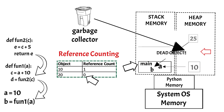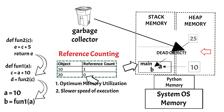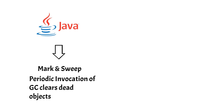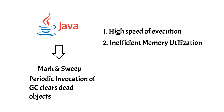This algorithm is helpful to keep memory utilization at its optimum, but it affects the speed of execution as the garbage collector is invoked frequently. Different programming languages use different garbage collection algorithms. For example, Java uses the mark and sweep algorithm, where all the dead objects are marked initially and a periodic invocation of garbage collection cleans them out. This type of algorithm is helpful to maintain high speed of execution, but it also leads to inefficient memory utilization. So both algorithms have their pros and cons. I hope that the concept is clear.